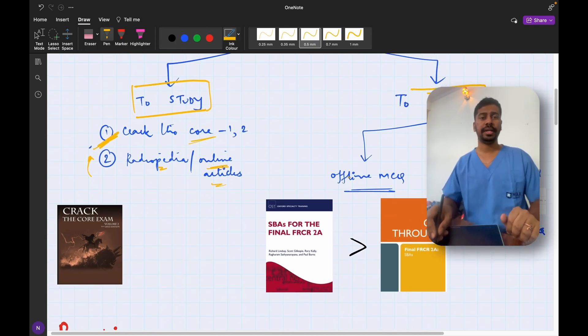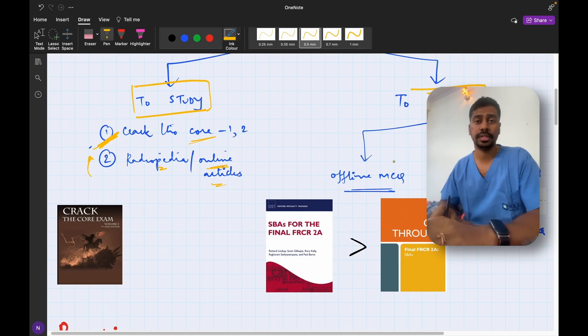And to practice, you have again two resources: the offline MCQ books and the online MCQ. So the offline MCQ books, two of the most famous ones are going to be your Oxford MCQ book and Get Through. Oxford MCQ book is popularly known by the name Richard Lindsay and this is going to be your gold standard MCQ book.